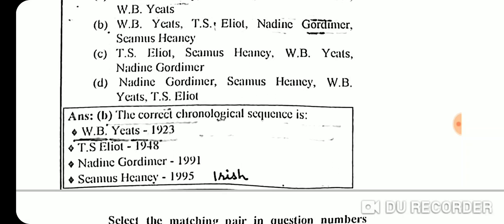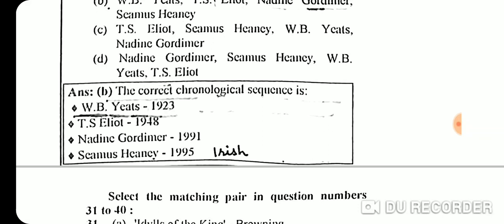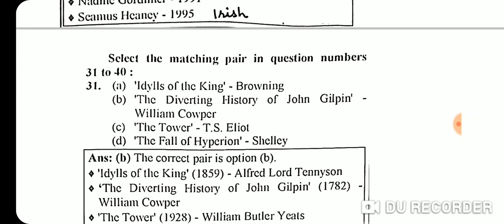Question 30 chronological sequence of Nobel Prize winners in Literature: W.B. Yeats (1923), T.S. Eliot (1948), Nadine Gordimer (1991), Seamus Heaney (1995).